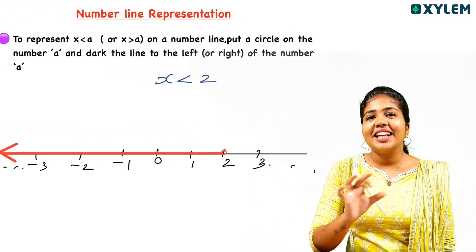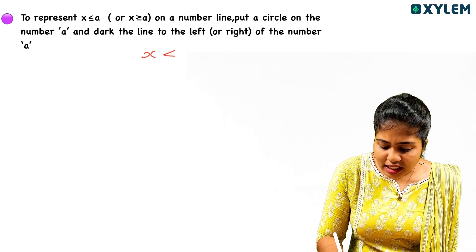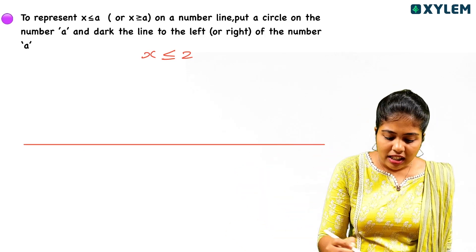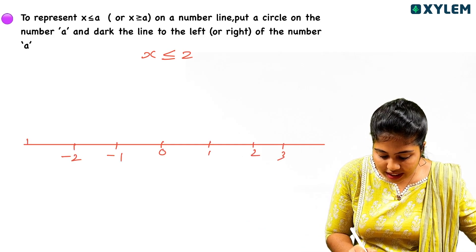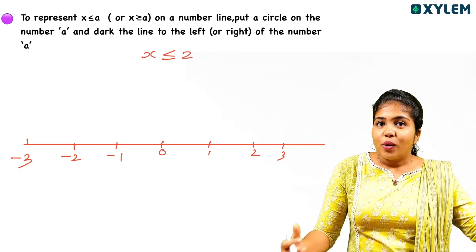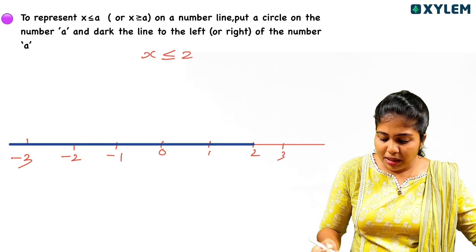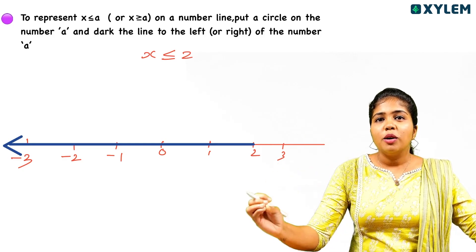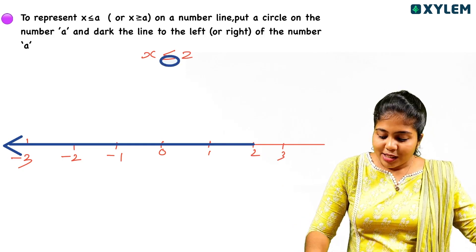x is less than 2 — this is the case on the number line. If you have x less than 2 versus x less than or equal to 2, you follow the same process. On the number line, mark 0, 1, 2, 3, minus 1, minus 2, minus 3. For x less than or equal to 2, we mark a filled (dark) circle at 2, because it includes the equal-to case.